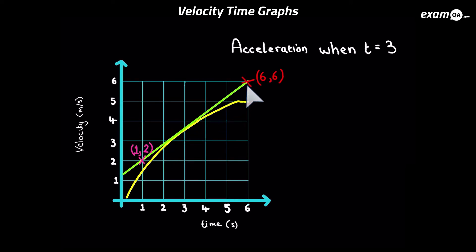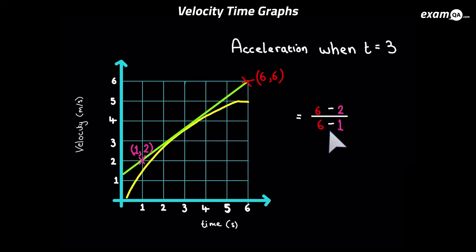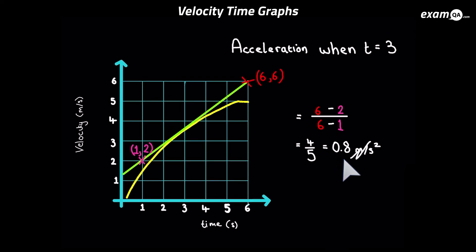Here I've chosen two nice integer coordinates. We simply do change in y over change in x to work out the gradient: (6 − 2) over (6 − 1) gives us 4 over 5, which is 0.8 meters per second squared — that's our acceleration at t = 3. If you're unsure about working out the gradient, just go back and watch the video on gradient of a line.